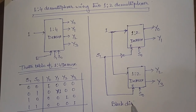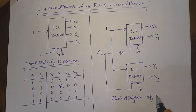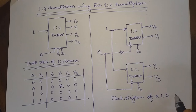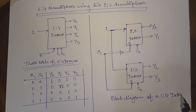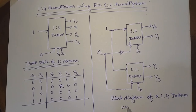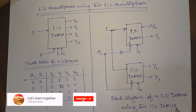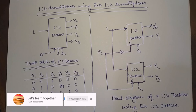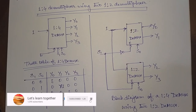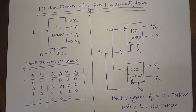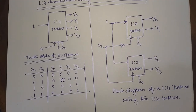This is the block diagram of a 1-to-4 demultiplexer using two 1-to-2 demultiplexers. Thank you for watching. Please like, share, and subscribe to my channel. If you have any questions, put them in the comment section below.